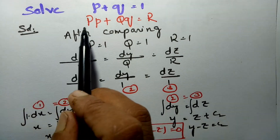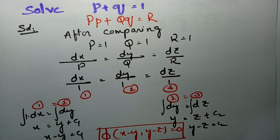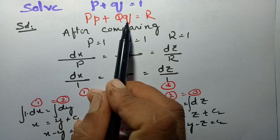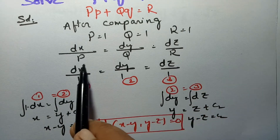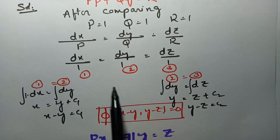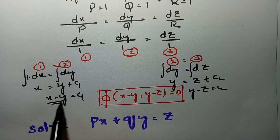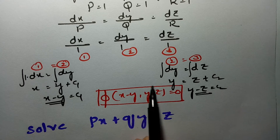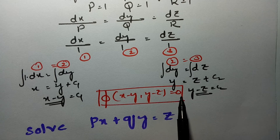So the general solution is φ(x − y, y − z) = 0. The question p + q = 1 is of the form P·p + Q·q = R — a Lagrange's linear equation. We transform it into the auxiliary form, substitute P, Q, R values, equate pairs of equations, and get solutions x − y and y − z.